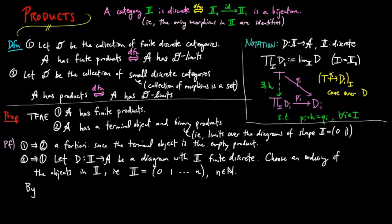Then by finite induction, we set L sub 0 equal to D sub 0 and L sub i plus 1 to be the binary product of D sub i plus 1 and L sub i.